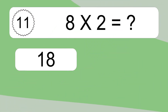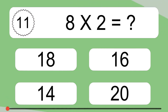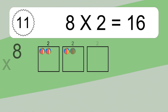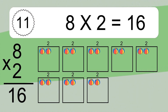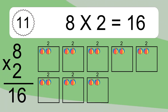8 times 2 equals what? 8 times 2 equals 16. We have 8 boxes, and each box has 2 colorful balls inside. If you count all the balls in all the boxes together, you will have 8 times 2 balls. This equals 16 balls.